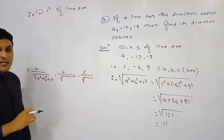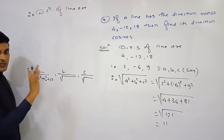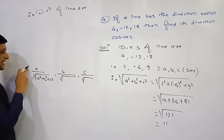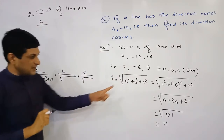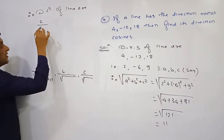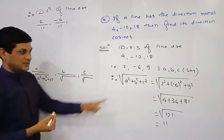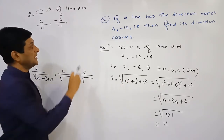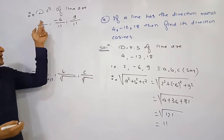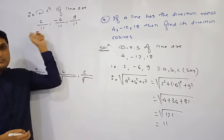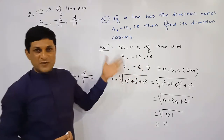Applying the formula — direction cosines = ±a/√(a²+b²+c²), ±b/√(a²+b²+c²), ±c/√(a²+b²+c²) — taking the positive sign, we get: l = 2/11, m = −6/11, n = 9/11. This shows how to find direction cosines when direction ratios are given.